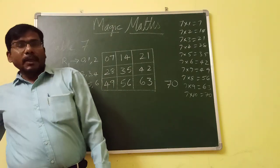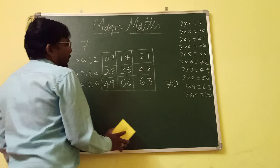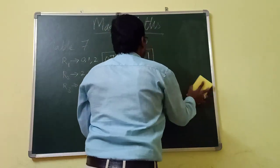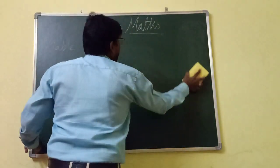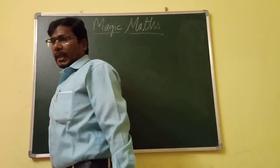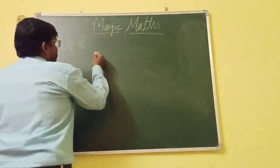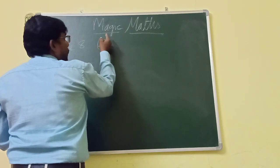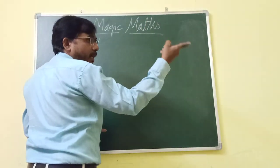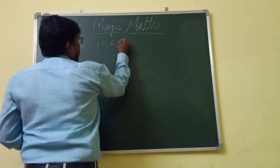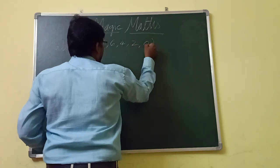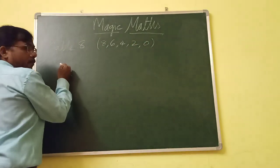And next one is table 8. How to find out the table? How to write the simple techniques to this table 8? In table 8, we have the numbers like in table 2, we followed some patterns. The patterns we followed are 2, 4, 6, 8, 0. Now here we need to follow 8, 6, 4, 2, and 0.